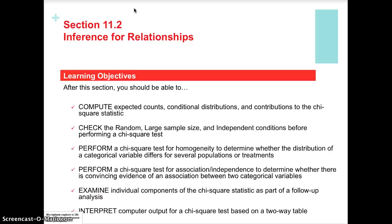By the end of this section, we should be able to calculate expected counts, conditional distributions, and contributions to the chi-square statistic. This is similar to what we did in the last section, except it's going to be slightly different because instead of working with a one-way table, we're going to be working with two-way tables.